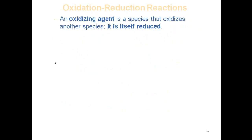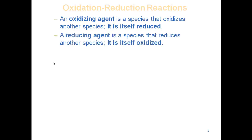An oxidizing agent is a species that oxidizes another species — it itself is reduced. It takes on electrons, so it allows something else to be oxidized. A reducing agent is a species that reduces another species — it itself is oxidized. That species is basically giving up electrons and undergoing the oxidation process, so it allows something else to be reduced.